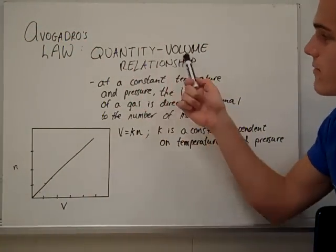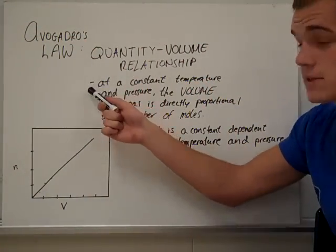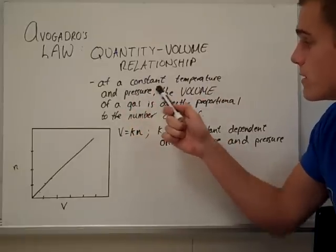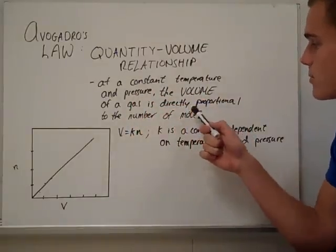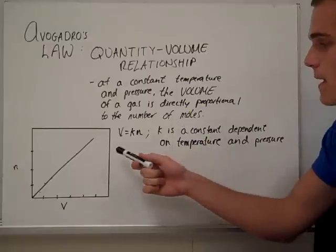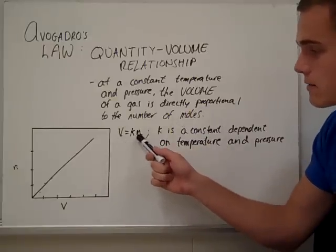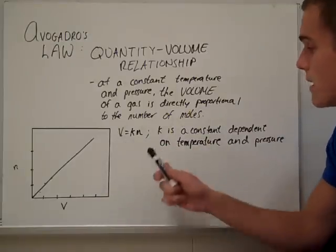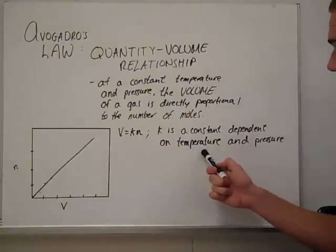Avogadro's law. The quantity and volume relationship. It states that at a constant temperature and pressure, the volume of a gas is directly proportional to the number of moles. It's expressed by V equals KN, the lowercase n variable being moles. K is a constant dependent on temperature and pressure.